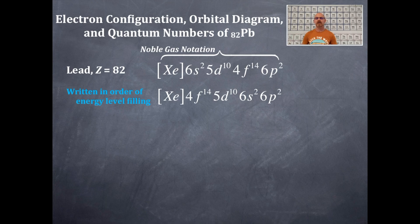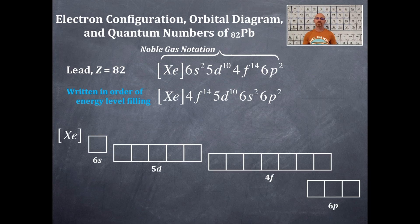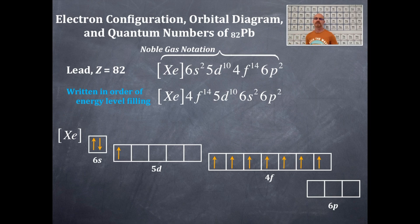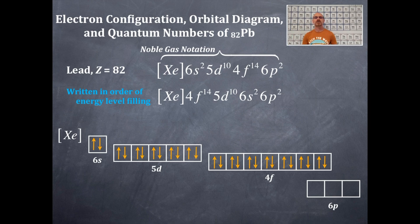Now we're going to do the orbital box diagram of this same thing. Look at all those boxes — this is going to be so much fun. So we're going to put this in order. Starting with the 4f14: up, down — filling each box. Then for the 5d10, it's an up for 5d1, and we're going to half-fill all these so that they are parallel spins, all half-filled. Then we're going to back-fill them until they are all completely filled. Coming back to the 5d again, half-filled with same parallel spin. Since it's 5d10, we back-fill starting here, and then that is all filled out. We finish it up with the 6p, and we've only got two in there — so it's up and up, and then we are done.